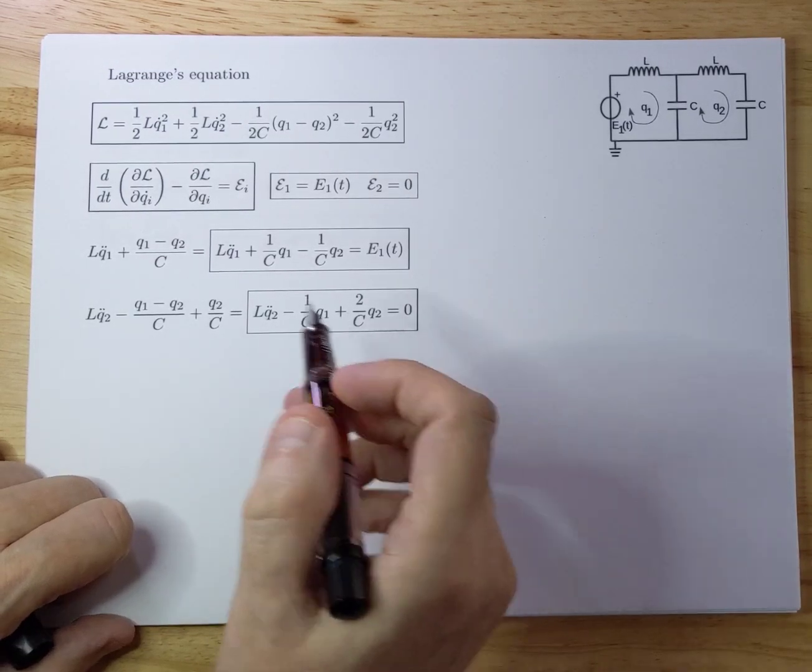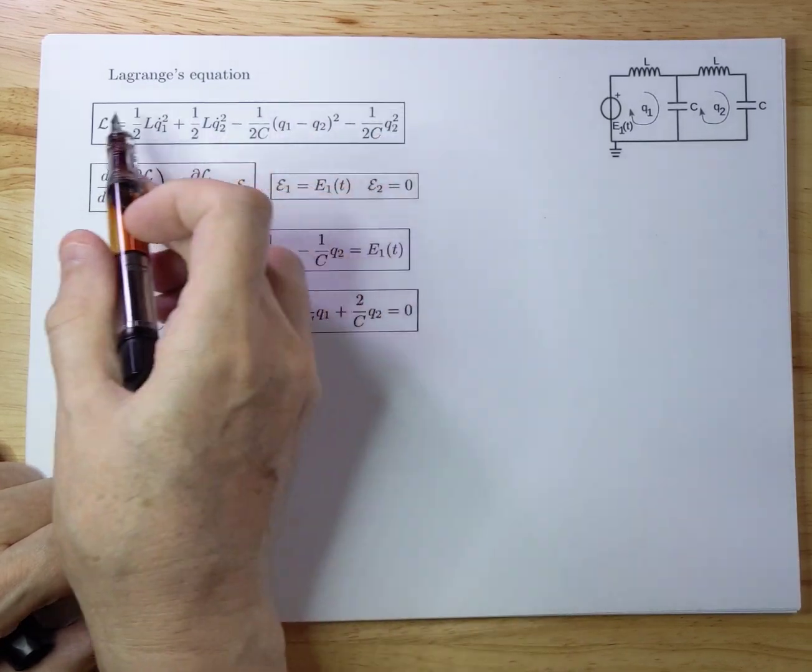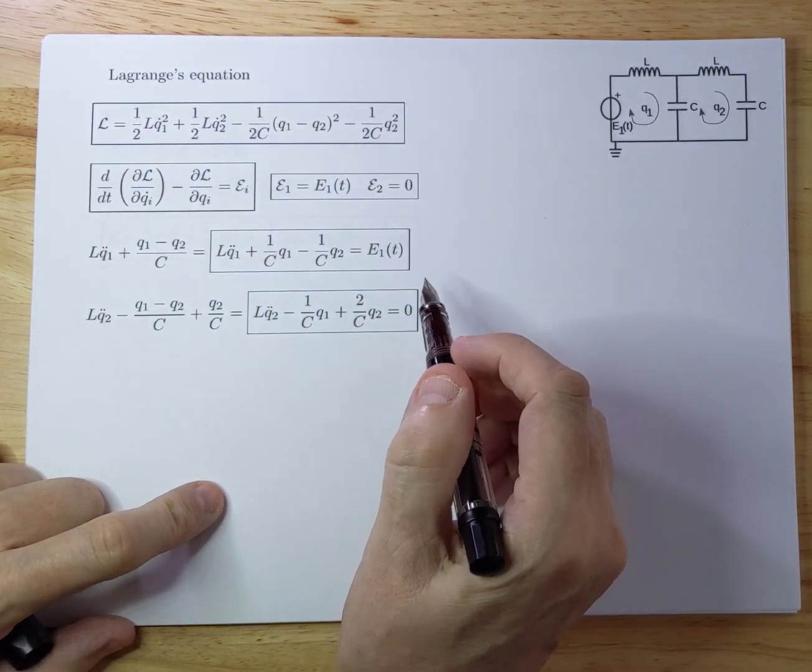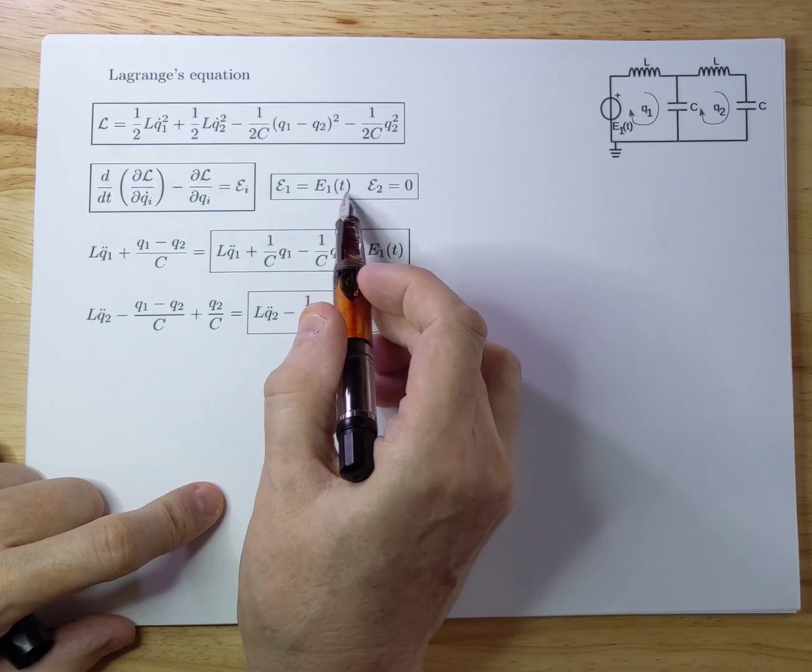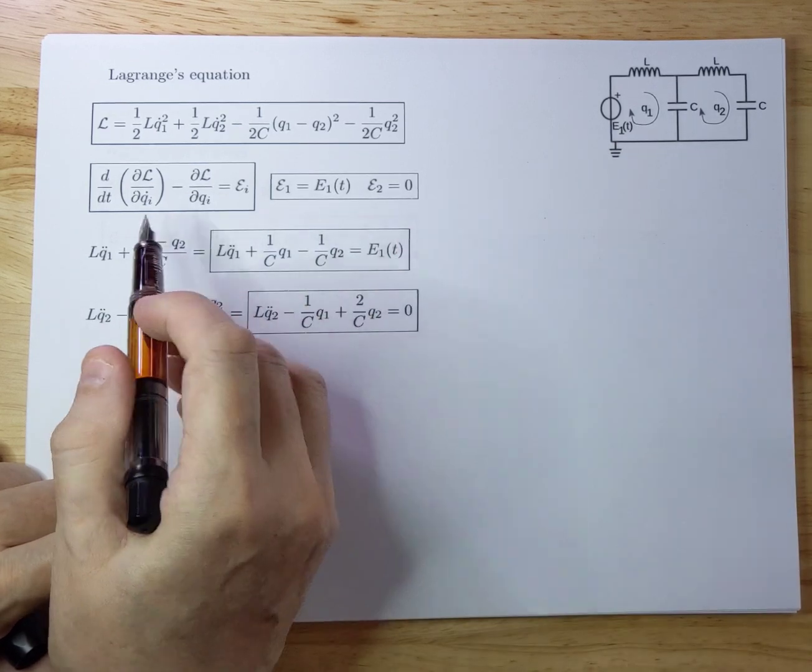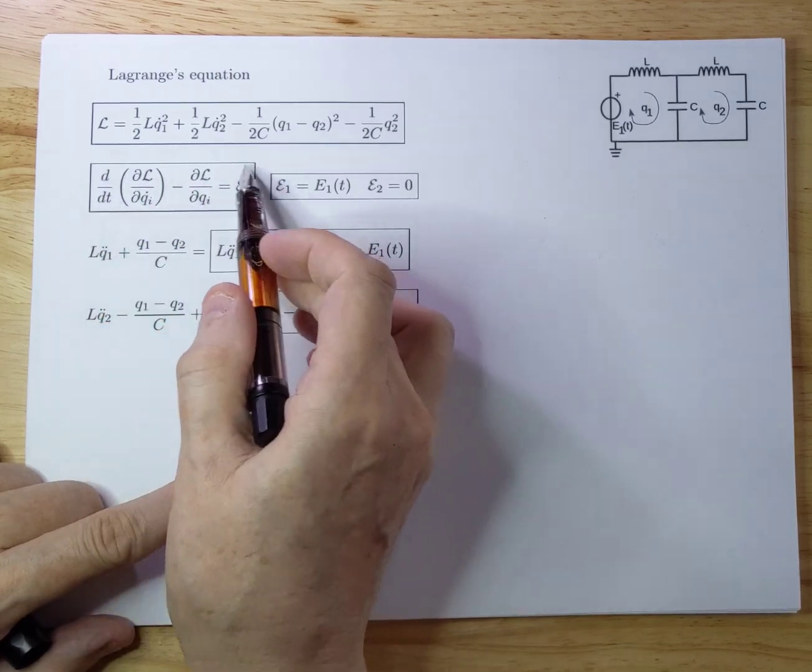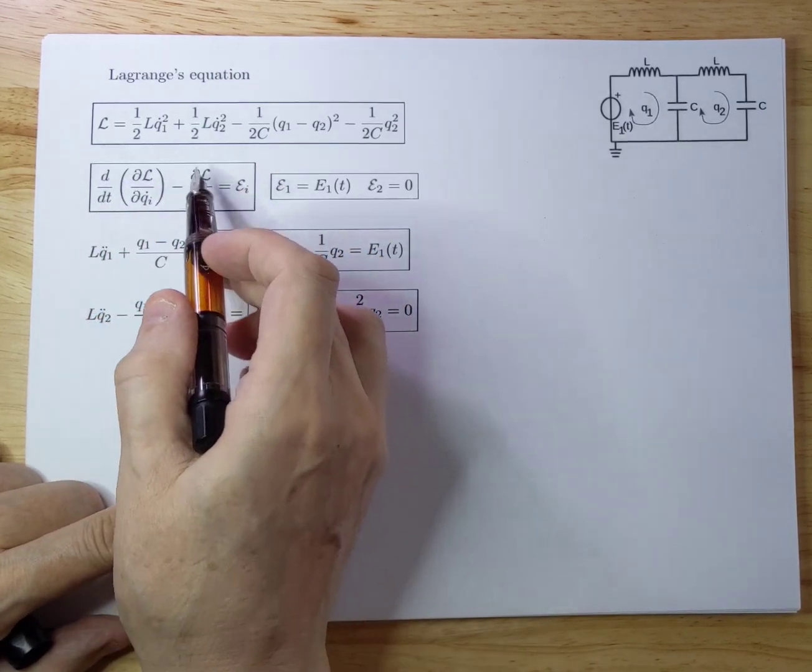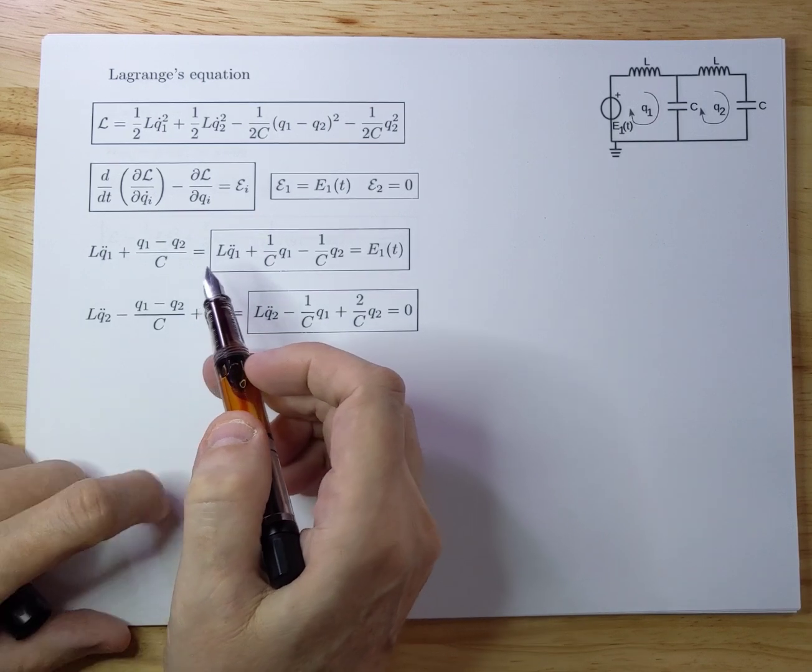I copied it for convenience, the Lagrangian over here, which was the one that we came up with in the previous slide. We have our generalized voltages. E1 was E1(t) here, and E2 is zero. And we have the Lagrangian equation here that we're going to explore and use to come up with the equations of motion.